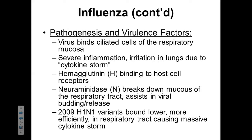As cells are infected with the influenza virus, the infected cells release dramatically high concentrations of cytokines that induce a large-scale inflammation of the respiratory tract. Hemagglutinin binds to the host cell receptors, and then neuraminidase is going to break down the mucous coating of our respiratory tract and will aid with the viral budding and release of new virulence particles. Back in 2009, H1N1 variants bound lower in the respiratory tract and more efficiently, causing massive cytokine storms and a large outbreak that sent many people to the hospital.